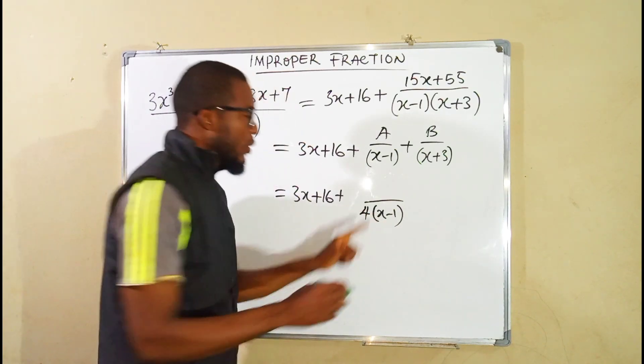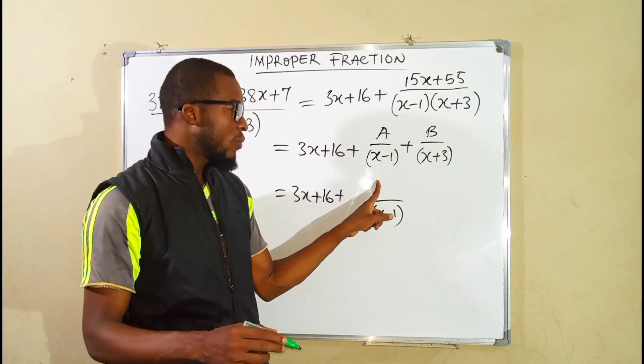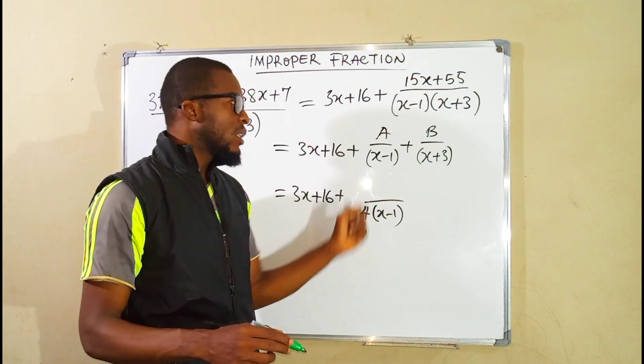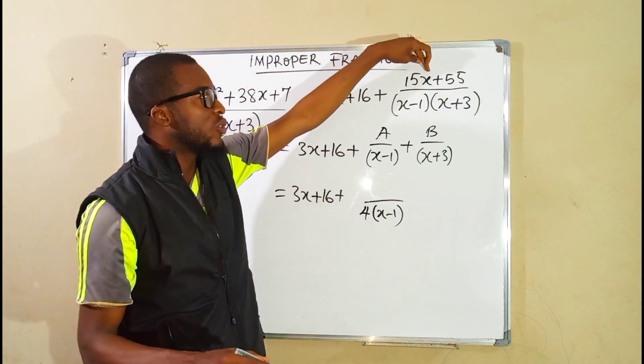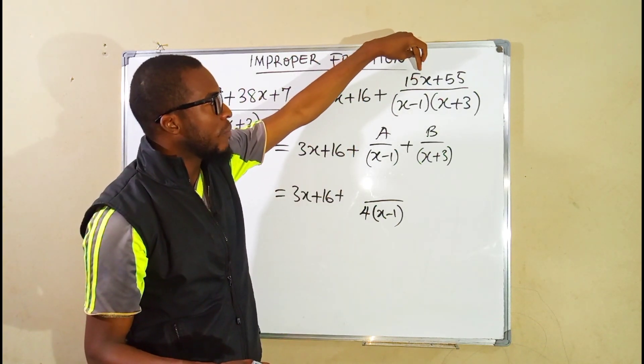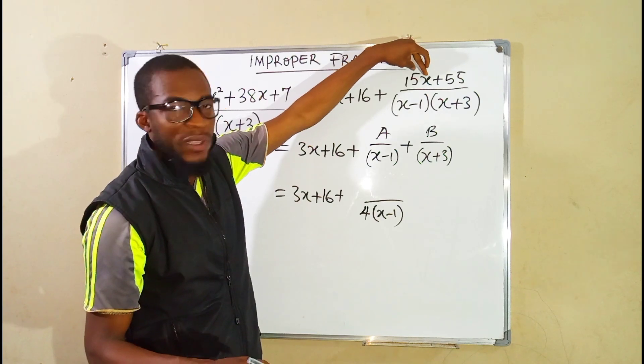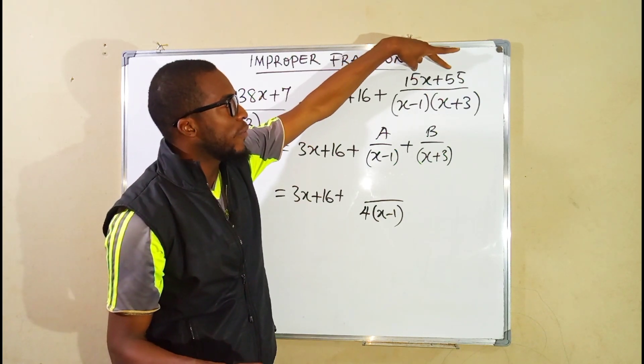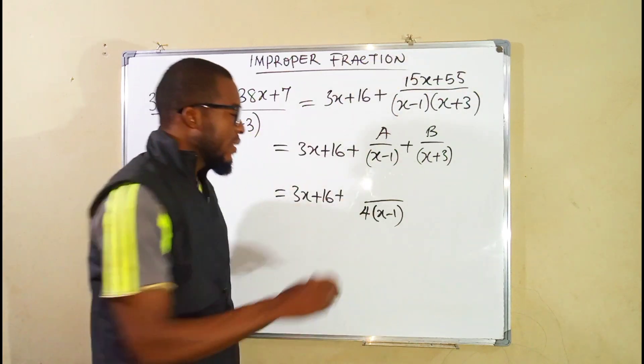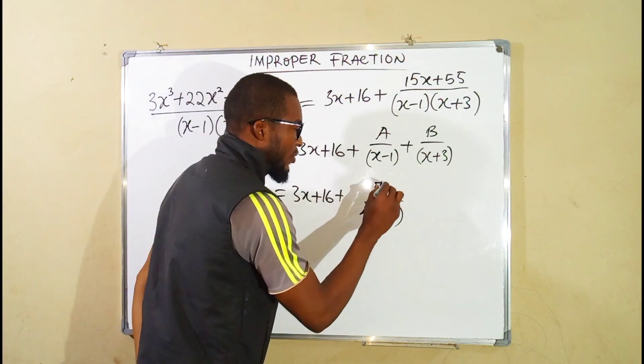So 1 plus 3 is 4. So we have 4 here. To find the corresponding numerator, we are going to substitute that 1 into this numerator. So we say 1 times 15 is still 15. Then 15 plus 55 is 70. So we have 70 to the top.